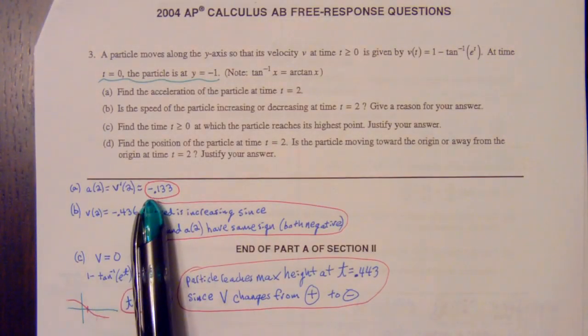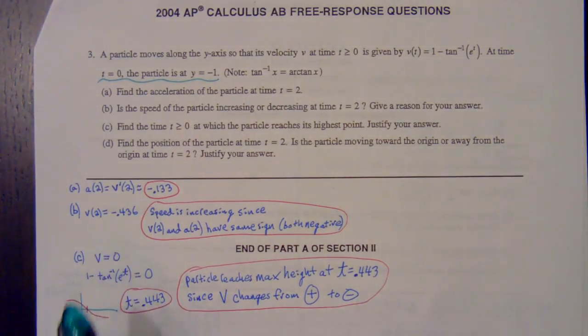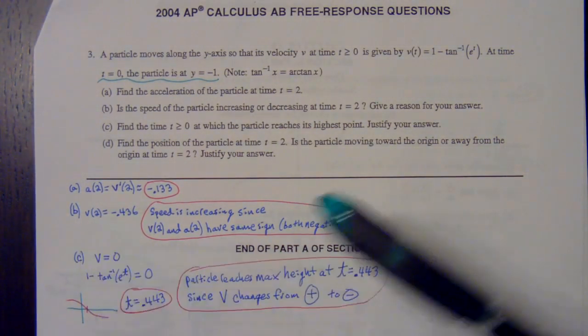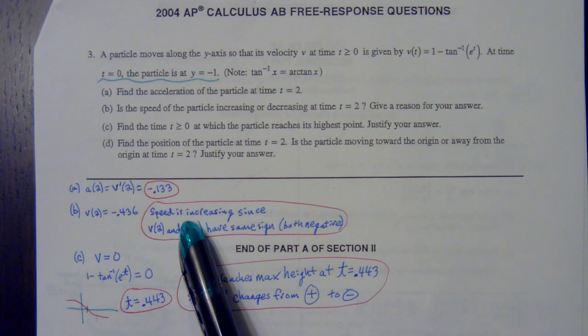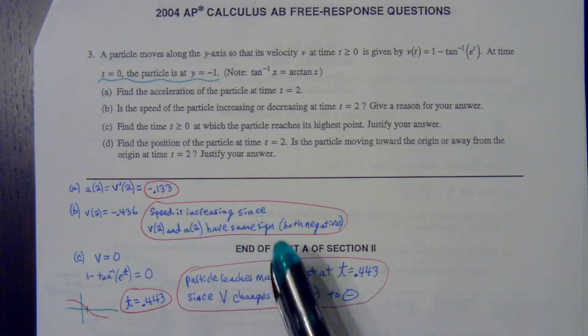We already know the acceleration is negative. What I then had to figure out is what's the sign of the velocity. So I took the two, plugged it into the velocity function. It gave me a negative number. Since they were both the same sign, I put speed is increasing since velocity and acceleration have the same sign.